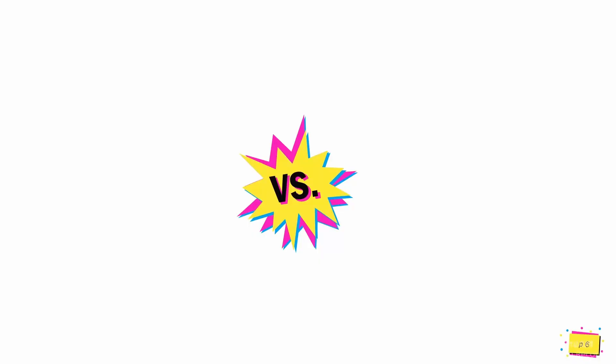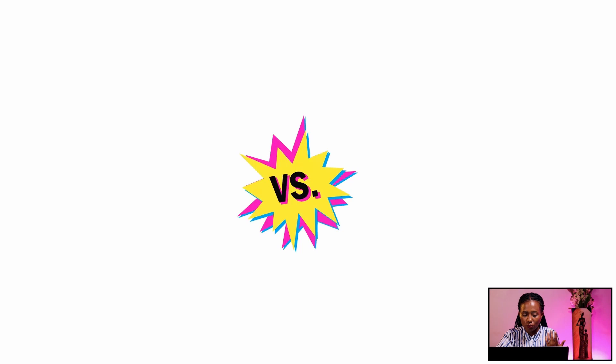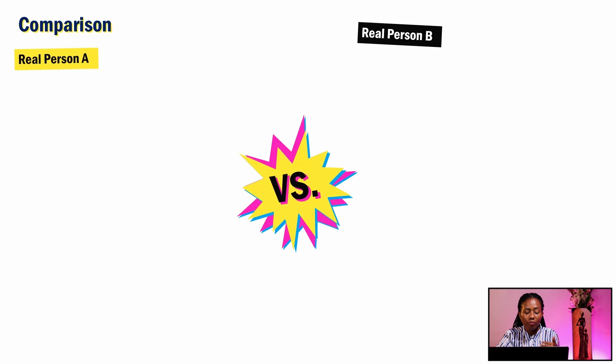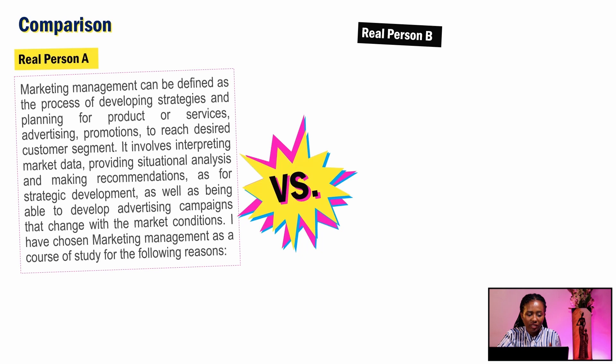Let's look at real introductions I have reviewed. Real Person A wrote: 'Marketing management can be defined as the process of developing strategies and planning for products or services, advertising, promotions to reach a desired customer segment. It involves interpreting market data, providing situational analysis, and making recommendations for strategic development, as well as developing advertising campaigns that change with market conditions. I've chosen marketing management as a course of study for the following reasons.' Clearly, Real Person A is defining what marketing management is — we should not be inputting definitions or explanations like this.